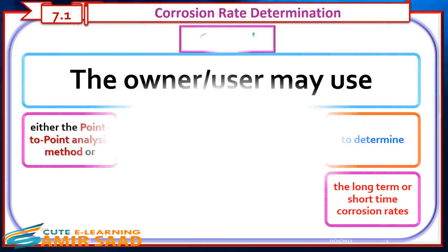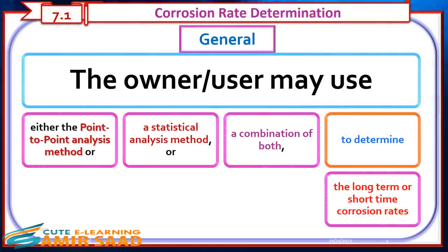Corrosion Rate Determination — General. The owner or user may use either the point-to-point analysis method, a statistical analysis method, or a combination of both, to determine the long-term or short-term corrosion rates.